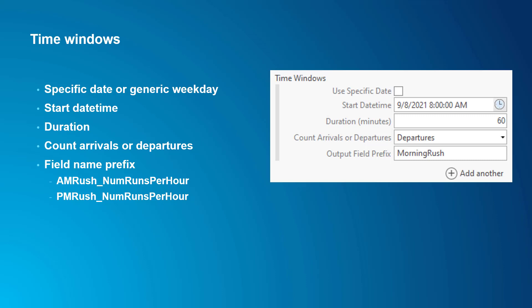The next thing you need to specify for your time window is the start date and time. The date portion will be interpreted either as a specific date or just the weekday depending on the previous parameter. The time portion will be the time of day when the time window starts. Next, specify the duration — the number of minutes the time window should last. Next, choose to count arrivals or departures. Finally, you need to give the time window a unique field prefix. The tool's output will include a bunch of fields representing the various transit frequency statistics, and the field names will be prefixed by this string. For example, if you have a time window for morning rush hour and another for evening rush hour, and you use amrush and pmrush as the field prefixes, the output will include fields amrush_numruns_per_hour and pmrush_numruns_per_hour. The time window settings are written to the metadata of the output feature class, so if you can't remember what your field prefix represents in the future, you can check the metadata for the full settings you used when you ran the tool.